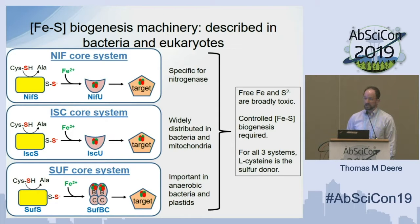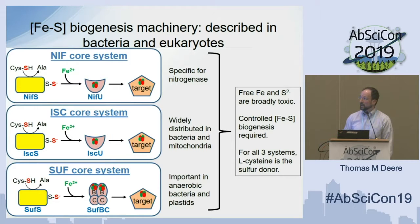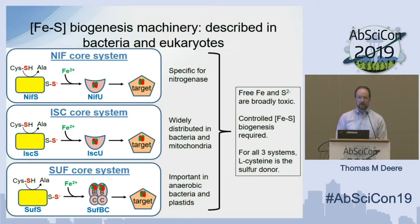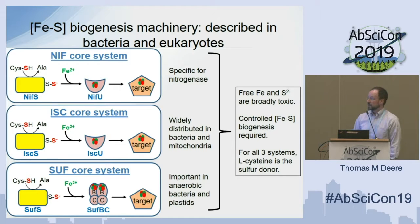What we do know about iron-sulfur cluster biogenesis we mostly know from bacteria and eukaryotes. There are three described systems with some commonalities. The first described was the nif system, specific for nitrogenase, described in Azotobacter vinelandii. Next described was the isc system — quite similar to nif but more widely distributed among bacteria and the mitochondria of eukaryotes; more of a housekeeping system for general iron-sulfur cluster biogenesis. Last described was the suf system, especially important in strict anaerobes and in the chloroplasts of plants.